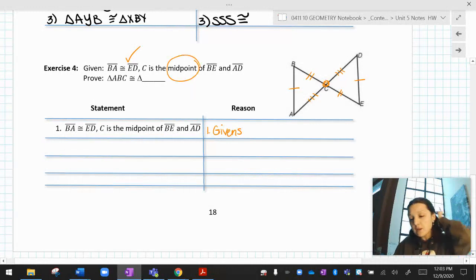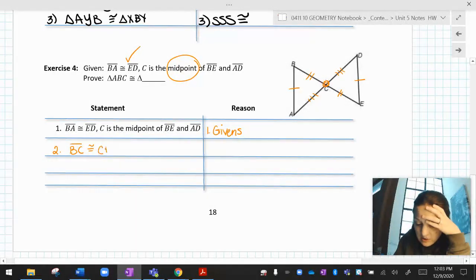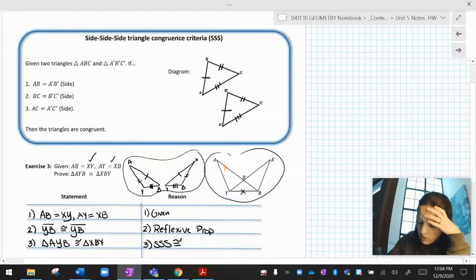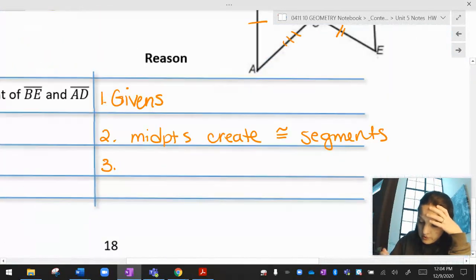And then we just said, based on the word midpoint, midpoints create congruent segments. I have two pairs of congruent segments formed by that midpoint. I know that BC and CE are congruent. And I know that AC and CD are congruent. And the reason for both of those is that midpoints create congruent segments. Whoa, my screen shrunk there. Midpoints create congruent segments.